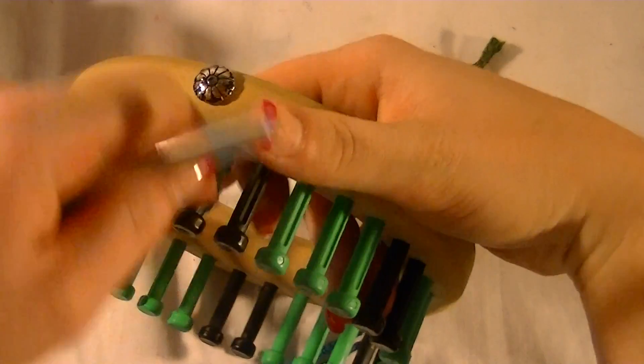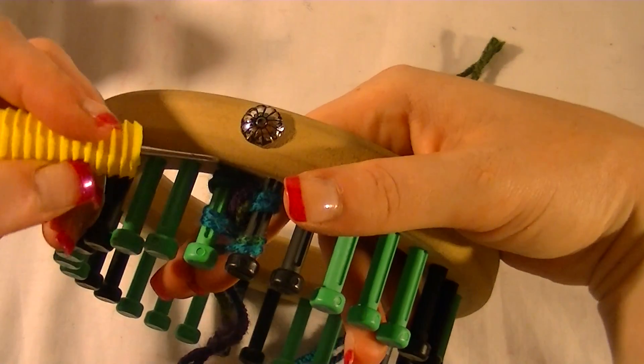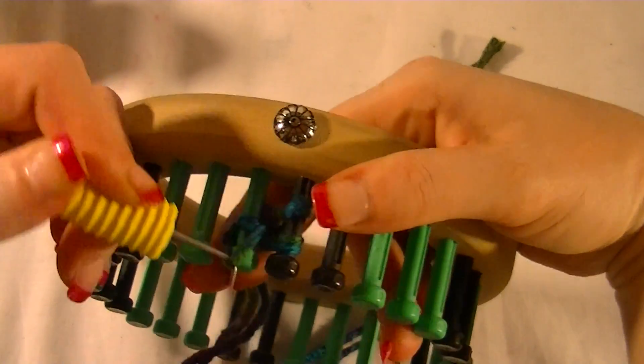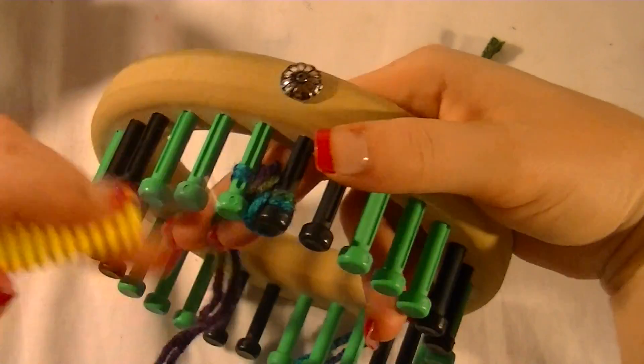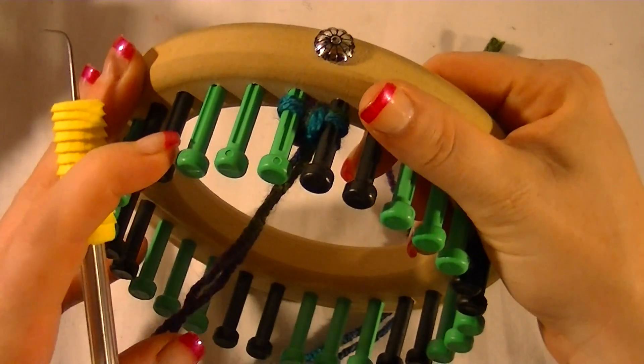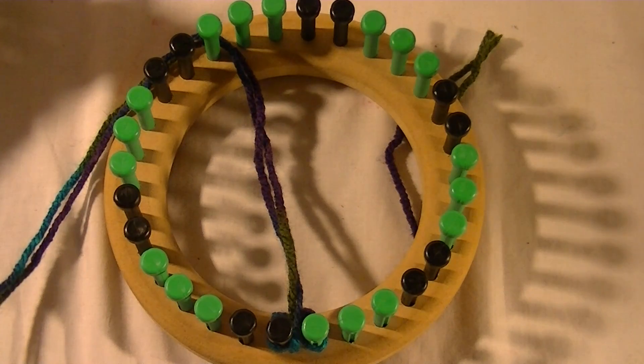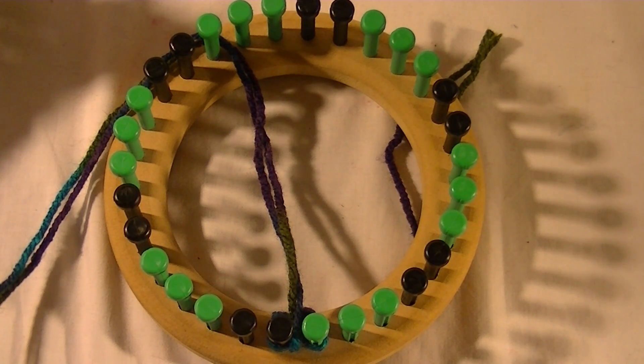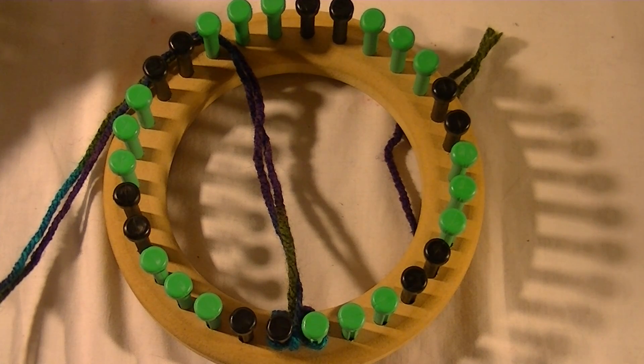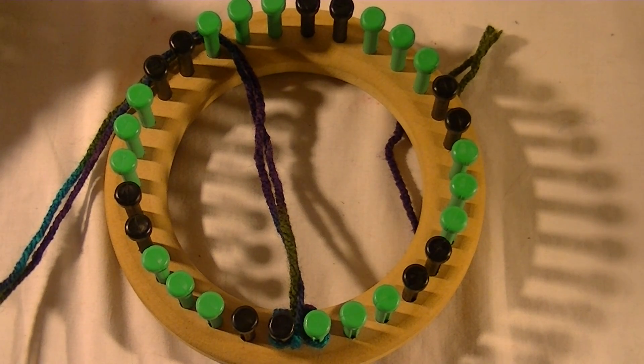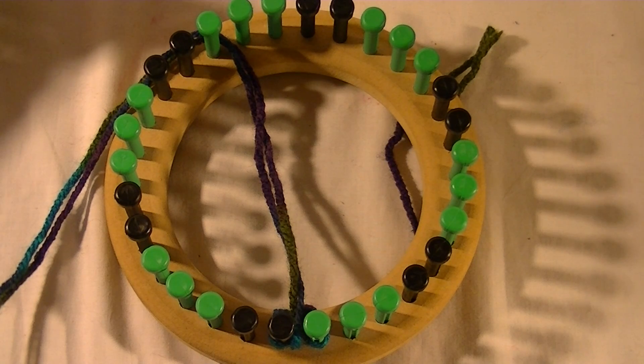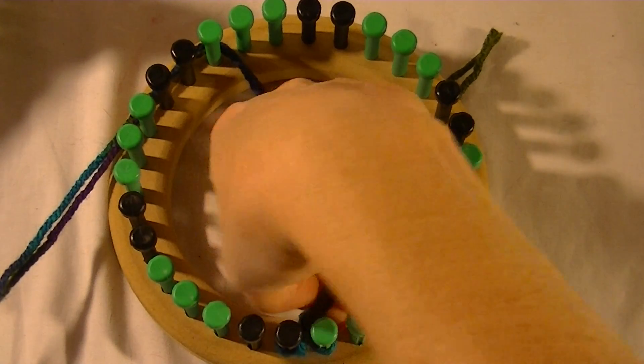You can double it over again to where you're running four strands together if you want it thicker. But that's all there is to doing an I-cord. I have in the video pattern for the spider and the pumpkin - it will show you how to connect the I-cords if you are putting them into a project. But this is just how to do an I-cord.